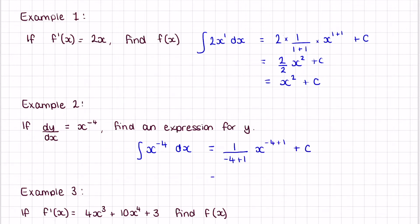Simplifying that: 1 over (-4+1) gives us negative one-third, and x to the power of -3, then plus c. This formula is also in your formula booklet, so you have it there to help you in your exams.